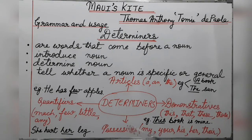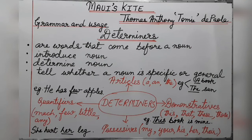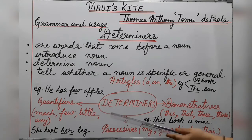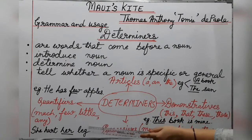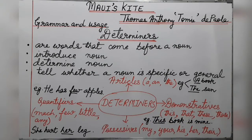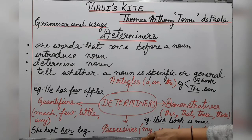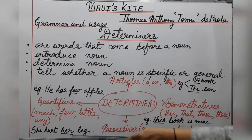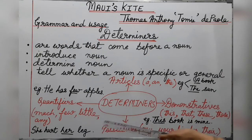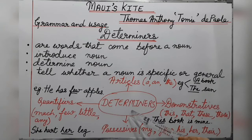The third type is possessives: my, your, his, her, their. Possessives show possession or ownership. For example, 'her leg' — here 'leg' is the noun and we are using the possessive 'her.' So 'her' is the determiner, showing belongingness.